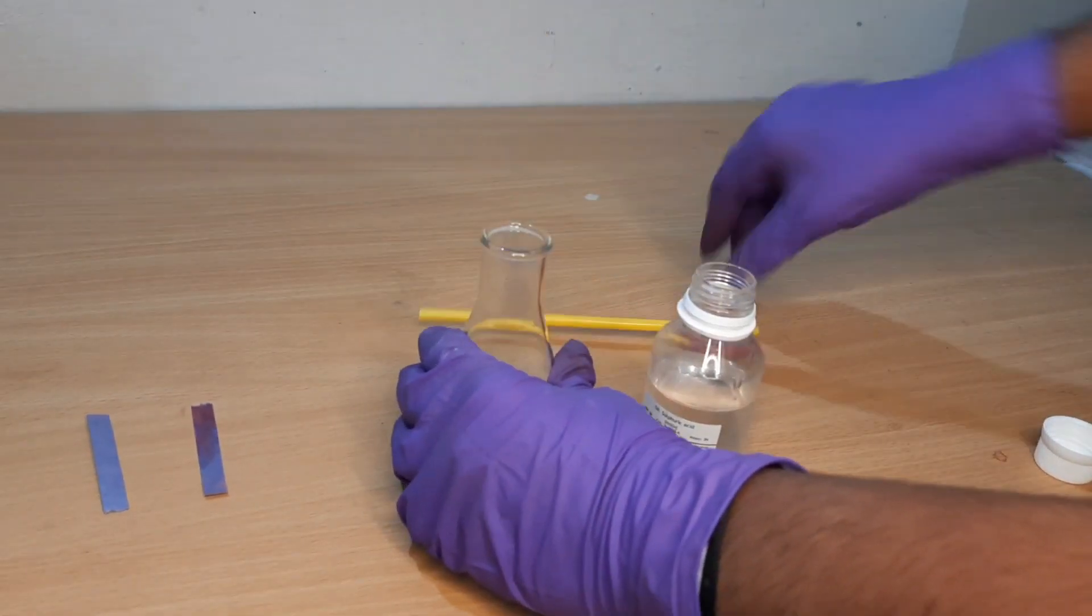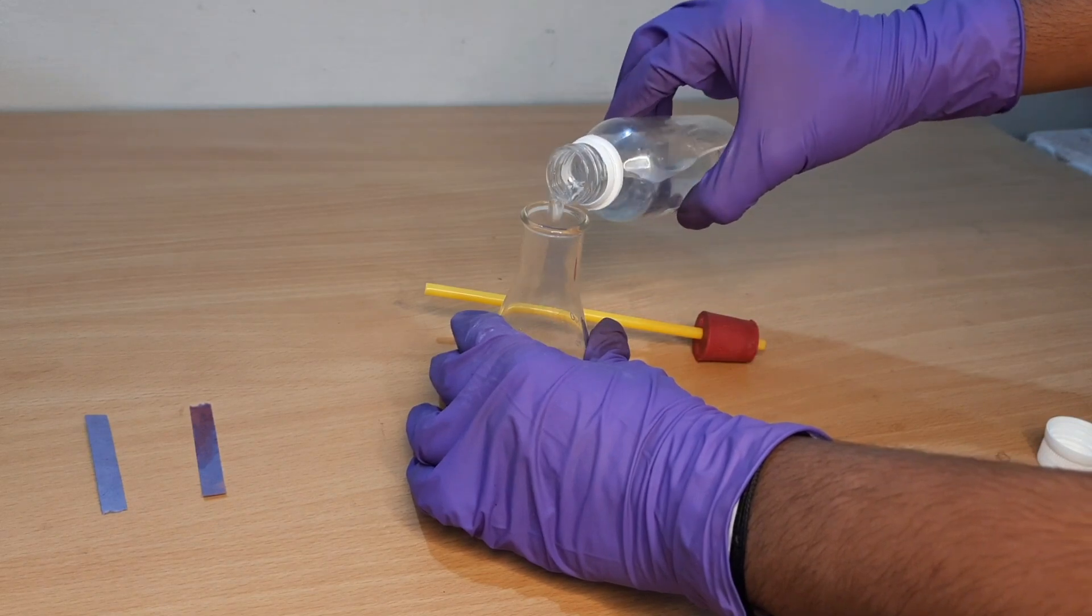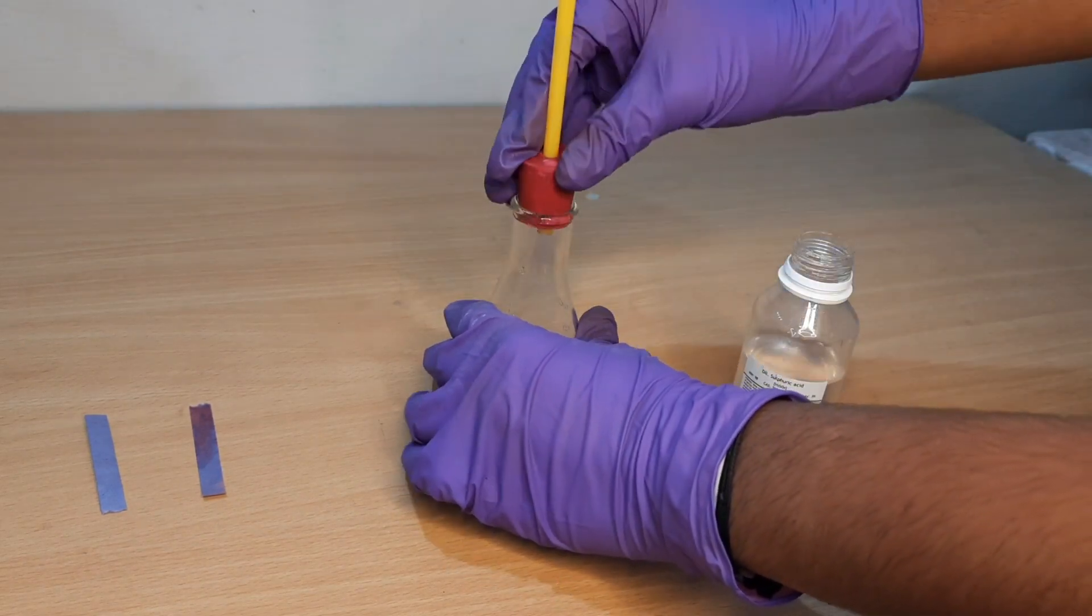Sulphuric acid reacts with sodium chloride to form hydrogen chloride gas. Hydrogen chloride gas starts coming out of the open end of the glass tube.